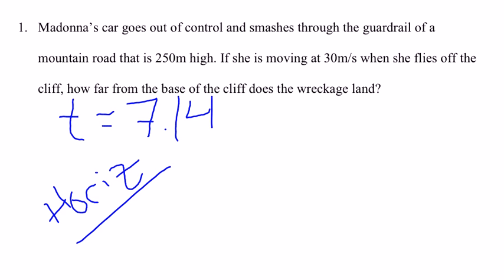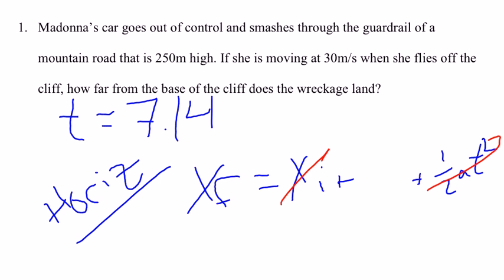And horizontally, we're using the big ugly, except it's a very boring big ugly. There's no initial position. That's gone. There's no acceleration. So, that's gone. The only thing you have left is VI times T. Initial velocity was 30. T is 7.14. Plug in, and you get an answer on your sheet.